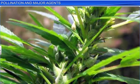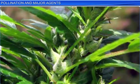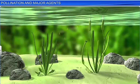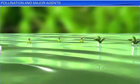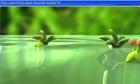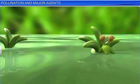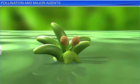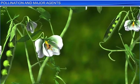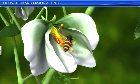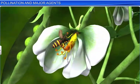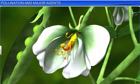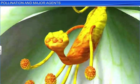Thus, wind, water, as well as biotic pollinating agents bring about pollination — an important process that ultimately leads to fertilization and the production of seeds in plants.